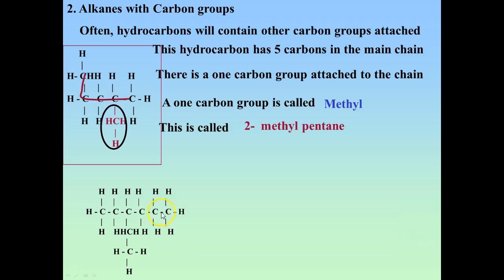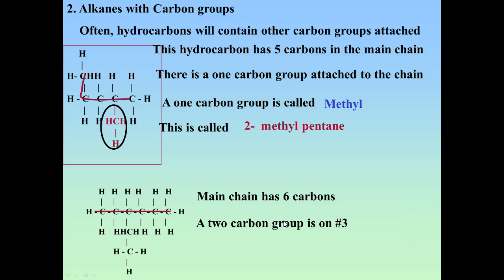With six carbons, the base name is hex, so it's hexane. Attached to the hexane is a two-carbon group — not a one-carbon group. A one-carbon group is methyl, so a two-carbon group would be an ethyl group. Where is it? Counting from the closer end: one, two, three. So this is 3-ethylhexane. We're just treating these the same way as the others.